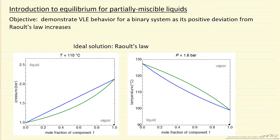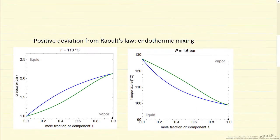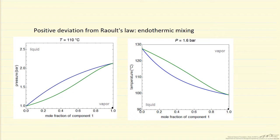Now as we get positive deviations from Raoult's Law, the PXY diagram bubble line is no longer a straight line, it's above the Raoult's Law result. On the TXY, the blue line, the bubble line, is below the Raoult's Law result.